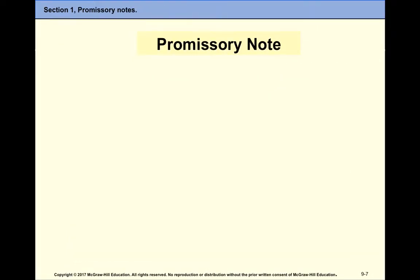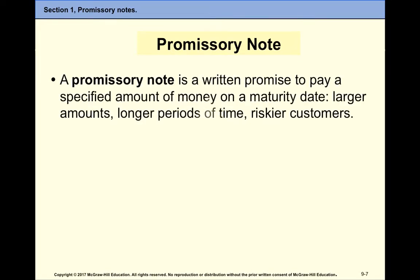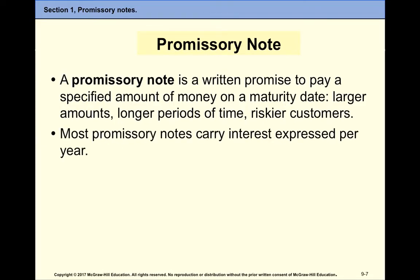The next section covers promissory notes. A promissory note is an IOU note — it's a loan, the amount that we give out to our customers. It's very similar to accounts receivable, but more formal; there is an actual note to be signed. We usually sign this note for larger amounts of transactions, longer periods of time, or riskier customers. Most promissory notes have an interest, and this interest we will have to calculate — it's always expressed per year. Here we assume notes with a length less than a year, so it will be three months or half a year, and we calculate the interest applicable to that period.